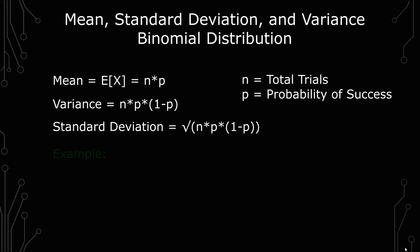So let's go into an example. n equals 100, the probability of success is 0.6, so let's calculate these.